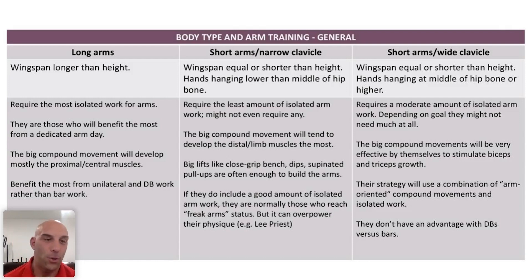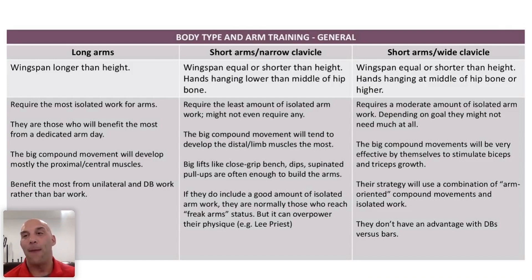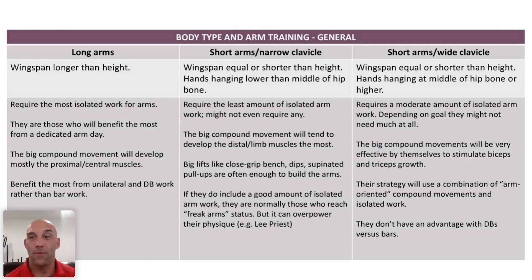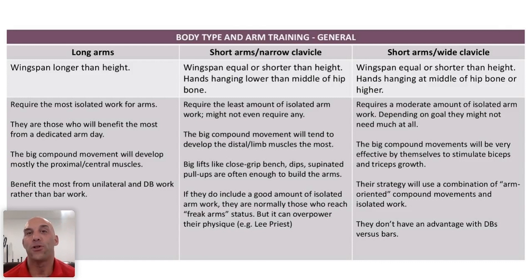For people with long arms — wingspan more than an inch and a half longer than height — it will require the most isolated work for arms. As we saw in the chest video, people with long arms among pressing muscles have a greater facility to develop the pecs than the triceps, and for pulling muscles a greater facility to build the lats than the biceps. So they need more isolated work for arms and less for chest and lats. These are the people who benefit the most from having a dedicated arms day. The big compound presses and pulls will mostly work the chest and back, so those big movements won't thoroughly stimulate the arms.